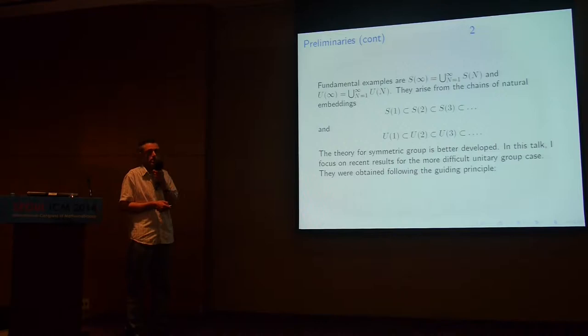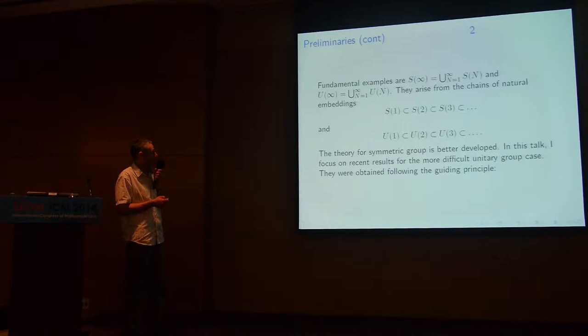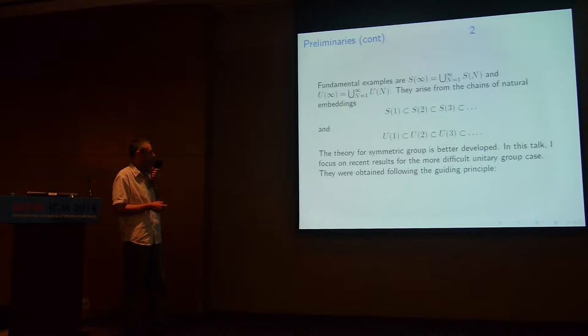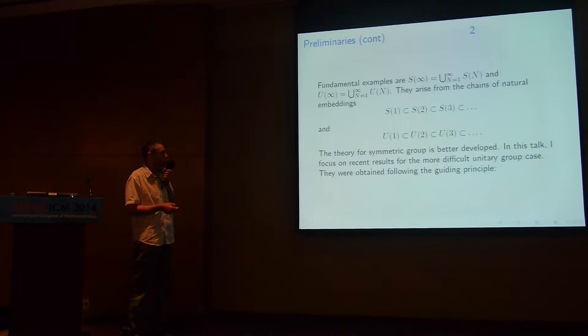What are fundamental examples of big groups? For me, these are the group S-infinity, which is the union of symmetric groups, and U-infinity, which is the union of compact unitary groups. These groups arise from chains of natural inclusions between the symmetric groups and between the unitary groups. The theory for the symmetric group is better developed, and in this talk I would like to focus on recent results for the more difficult case of unitary groups.